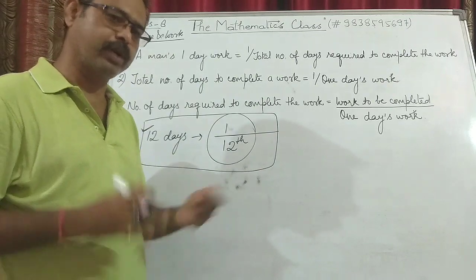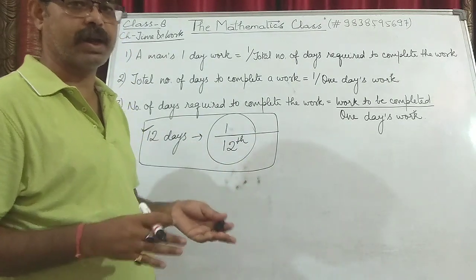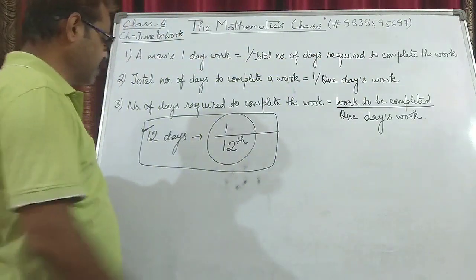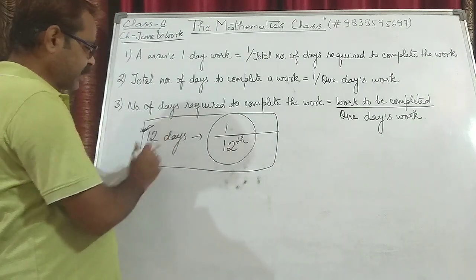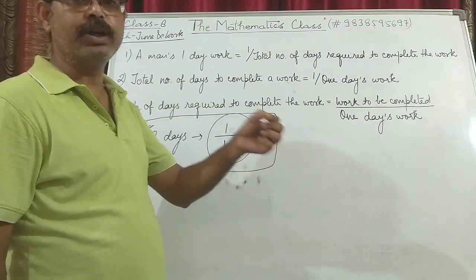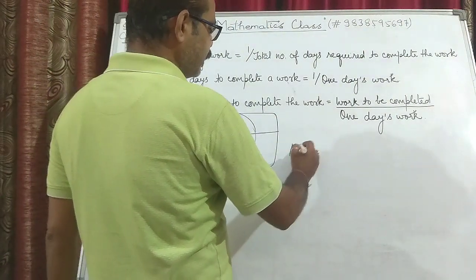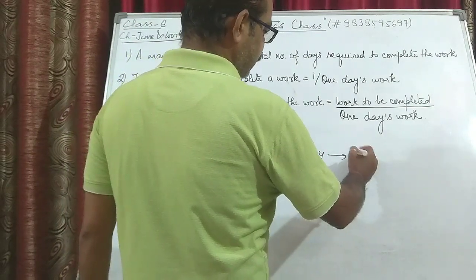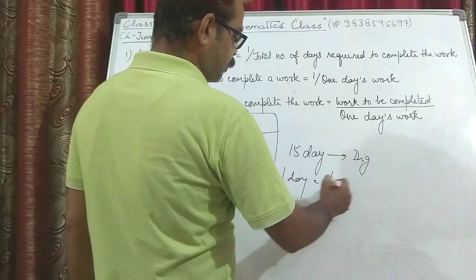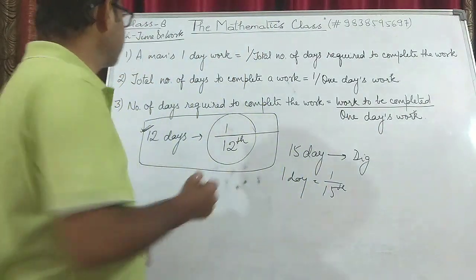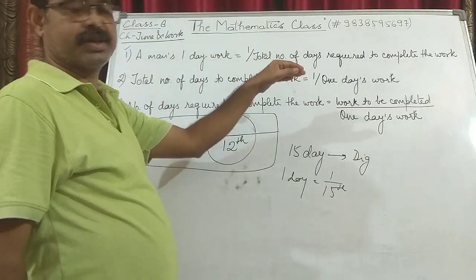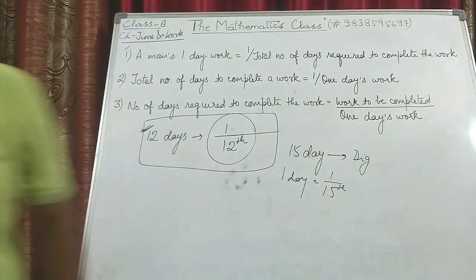We call it a formula, but it's not really a formula. A man's one-day work is 1 upon the total number of days required to complete the work. For example, if a laborer takes 12 days to build a wall, on average in one day he will build 1/12th of the wall. Similarly, if a person digs land in 15 days, in one day he digs 1/15th of that land. So if we have to find a man's one-day work, it is 1 upon the total number of days required.